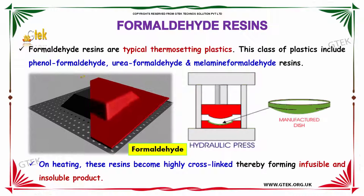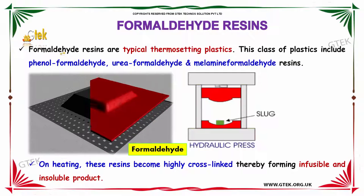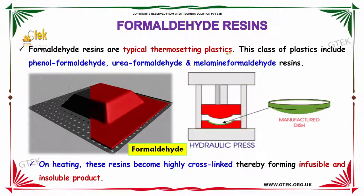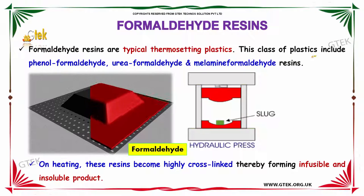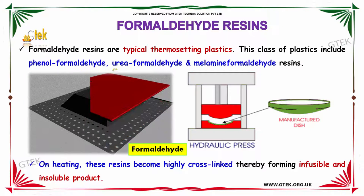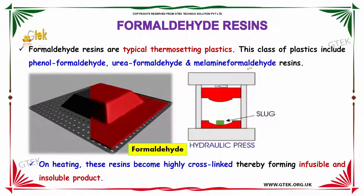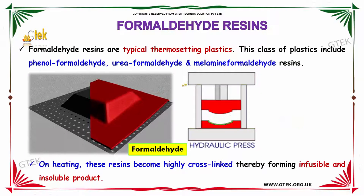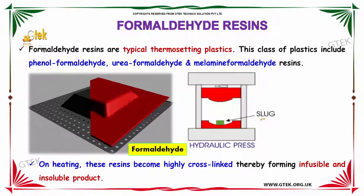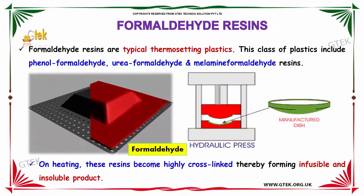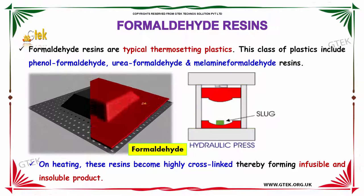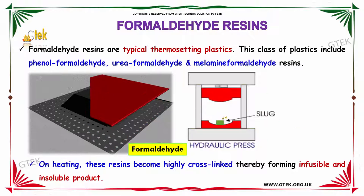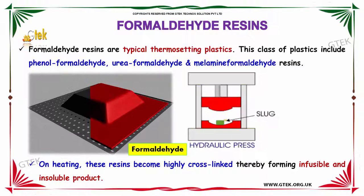An important topic we are going to discuss is formaldehyde resins. Formaldehyde resins are typical thermosetting plastics. This class of plastics includes phenol formaldehyde, urea formaldehyde, and melamine formaldehyde resins. These are generally prepared using a hydraulic press, where a slug is placed in a manufactured dish. On heating these resins, they become highly cross-linked, therefore forming infusible and insoluble products.